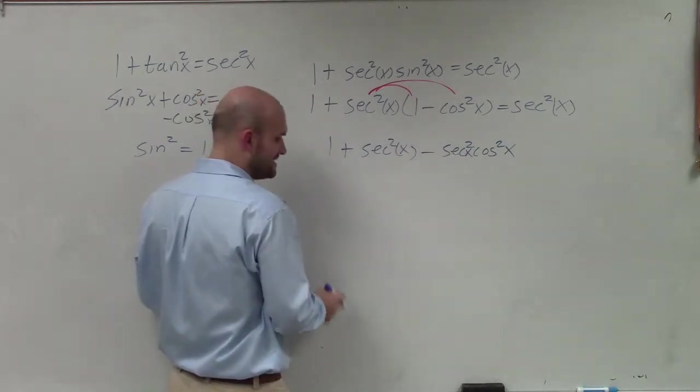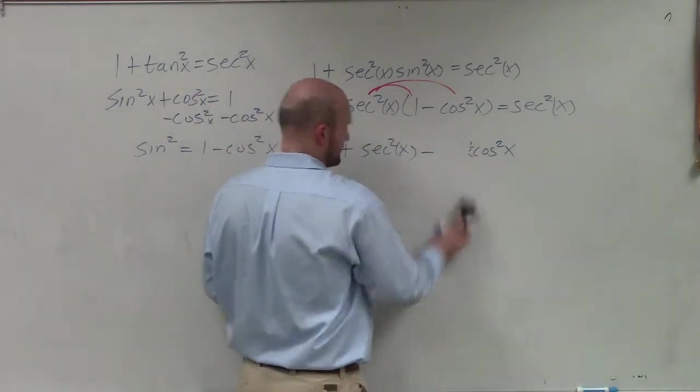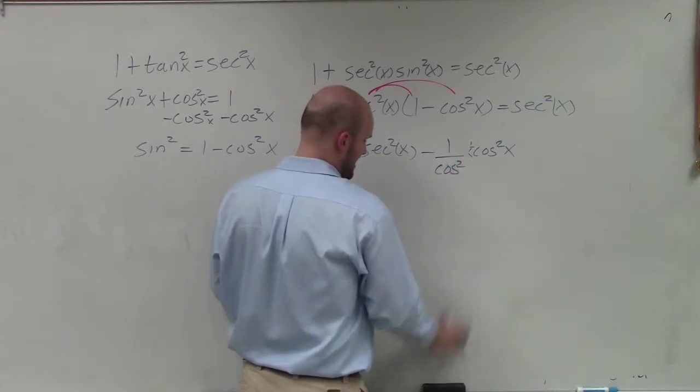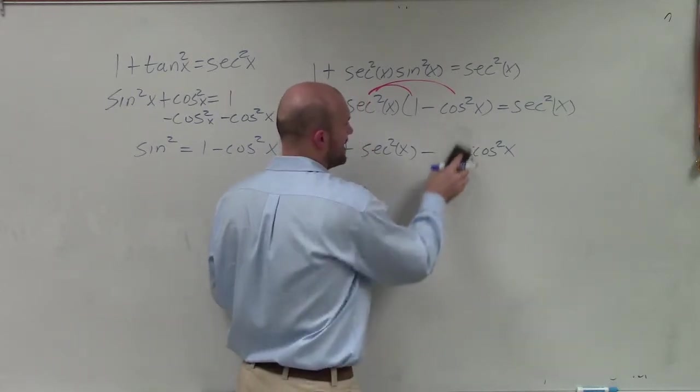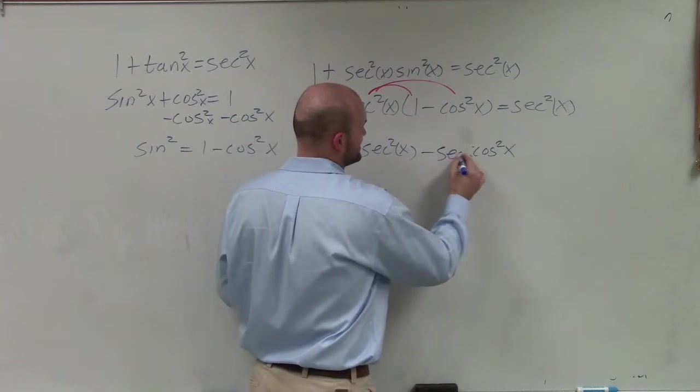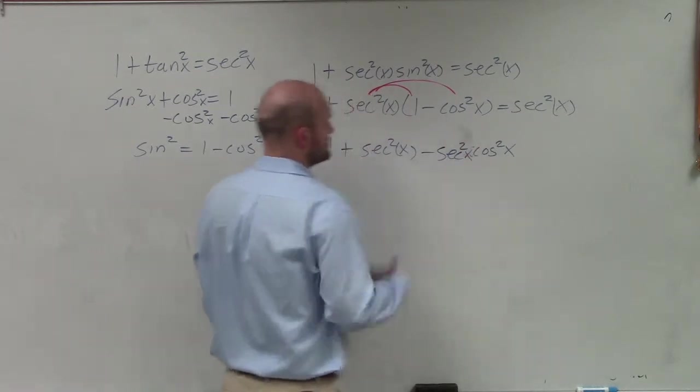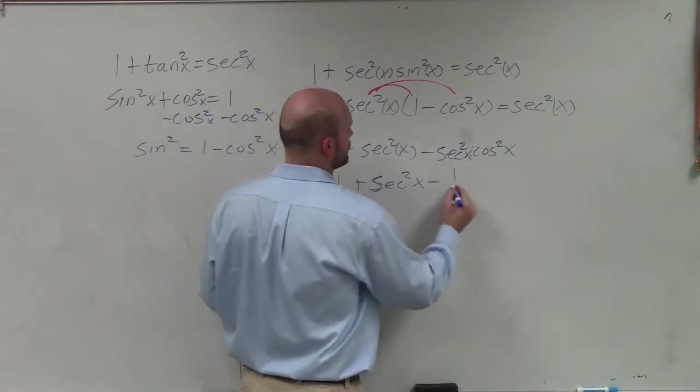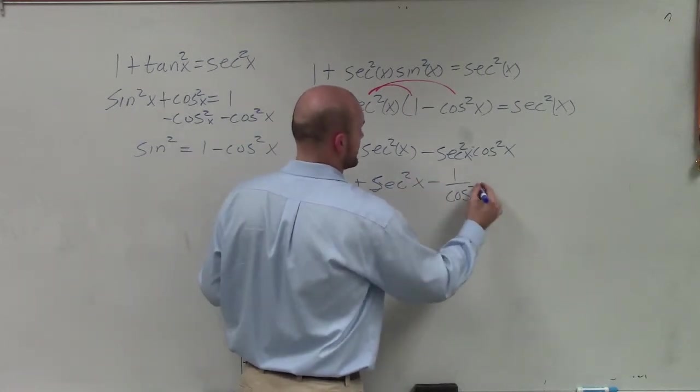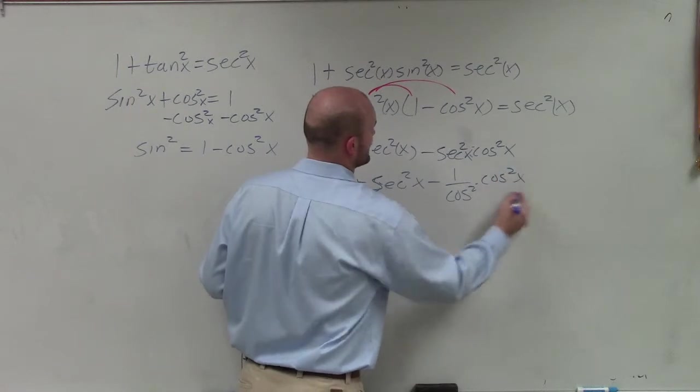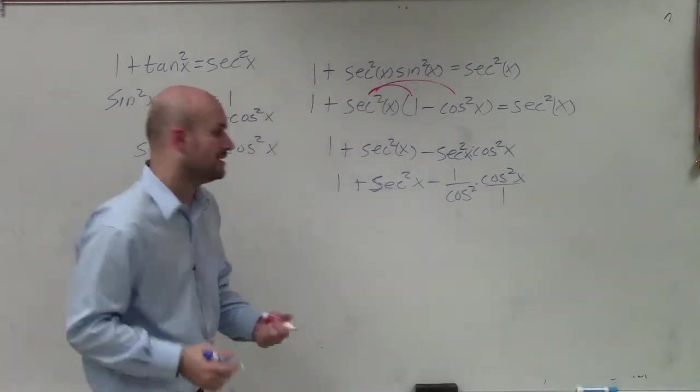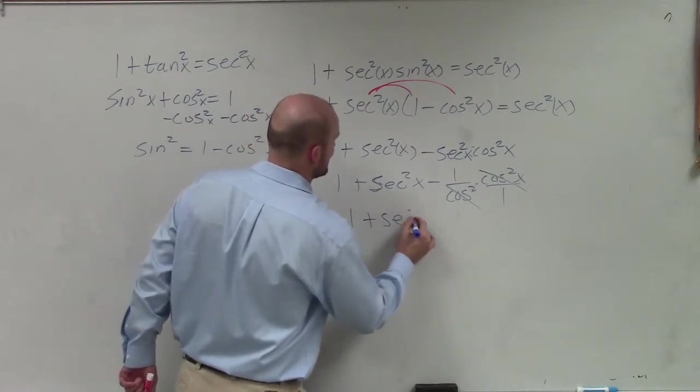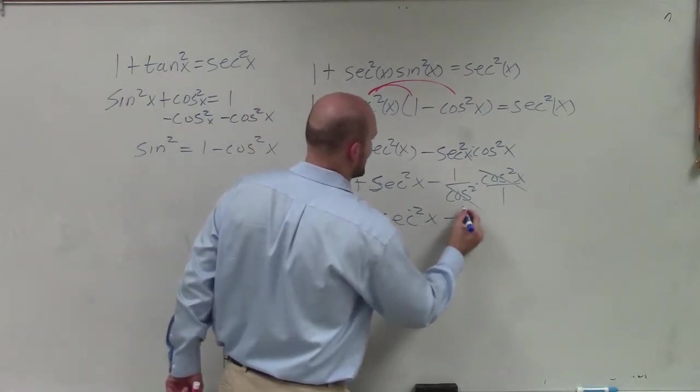Well, I know I can rewrite secant in terms of cosine. So that's going to be 1 over cosine squared. And let's just do it in a separate one, right? Why be lazy, Mr. McLogan? Let's just rewrite it. So 1 plus secant squared of x minus 1 over cosine squared times cosine squared of x. Well, we know that cosine is going to be over 1. Therefore, those divide into 1. So I have 1 plus secant squared of x minus 1.